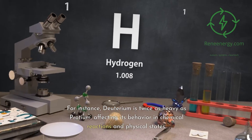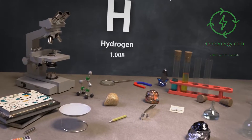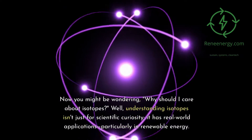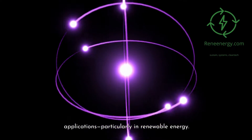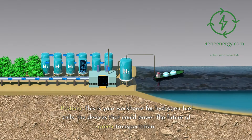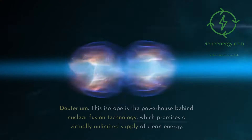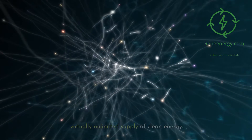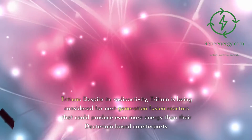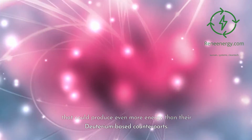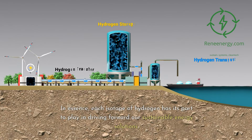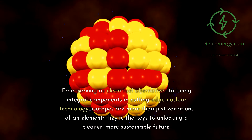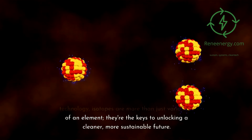Though they share the same chemical properties, their differing numbers of neutrons give them distinct physical properties. For instance, deuterium is twice as heavy as protium, affecting its behavior in chemical reactions and physical states. Understanding isotopes isn't just for scientific curiosity — it has real-world applications, particularly in renewable energy. Protium is the workhorse for hydrogen fuel cells, powering the future of green transportation. Deuterium is the powerhouse behind nuclear fusion technology, which promises a virtually unlimited supply of clean energy. Tritium, despite its radioactivity, is being considered for next-generation fusion reactors that could produce even more energy.